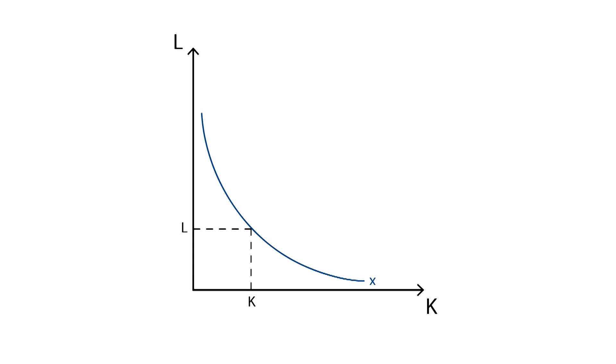However, increasing all inputs by equal proportions and at the same time will increase the scale of production. Let's say we double the quantity of input K and input L, and let's say this doubles the quantity of output produced to 2x.